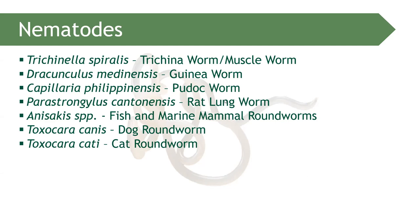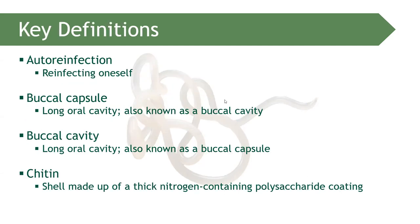Before we discuss each parasite, let's cover key definition of terms. Auto-reinfection: you are being reinfected because of yourself — self-reinfection. An example is Enterobius vermicularis, which is capable of causing auto-reinfection. Our nematodes are also equipped with what we call a buccal capsule — a long oral cavity, also called buccal cavity. They are the same: the buccal capsule is the mouth, the start of the alimentary tract.